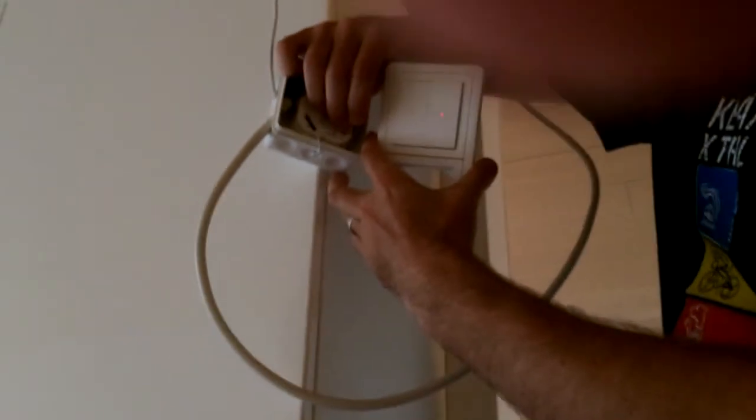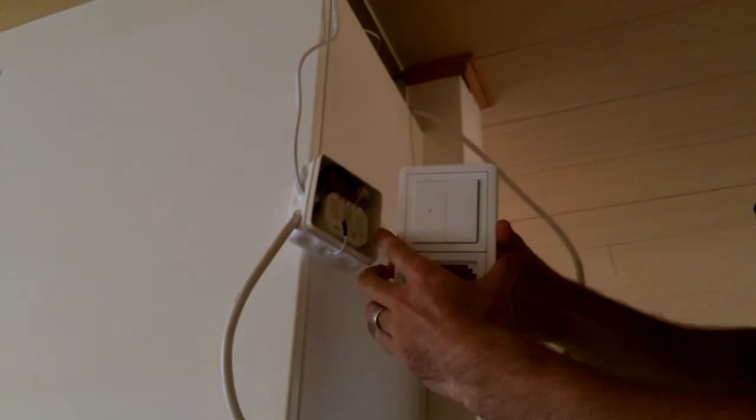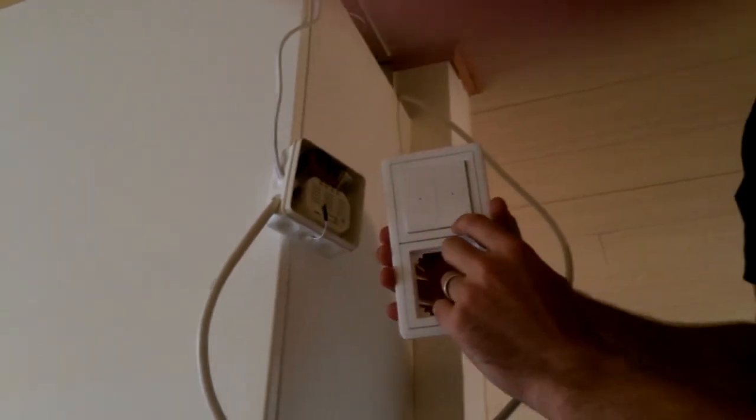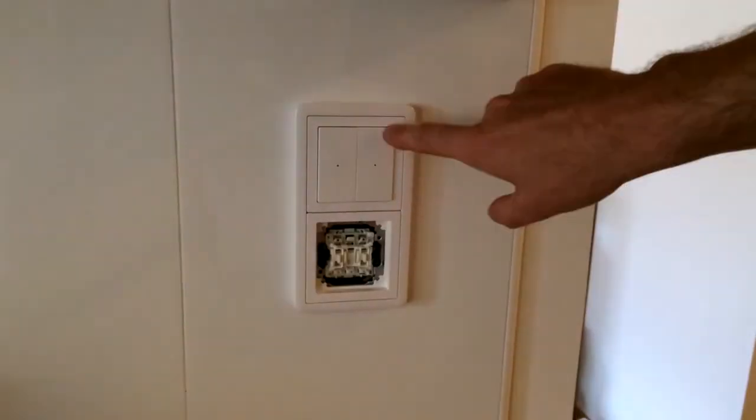Green light should blink on the receiver and then on your light switch you should see a green light as well to confirm the connection. Now the switch and receiver can talk to each other and you can happily turn your lights on and off once again. Hope this was helpful.